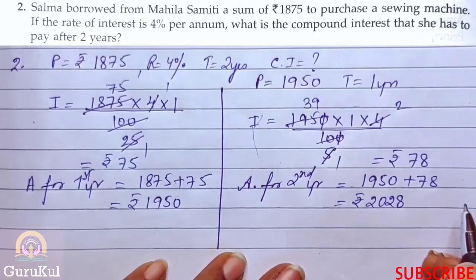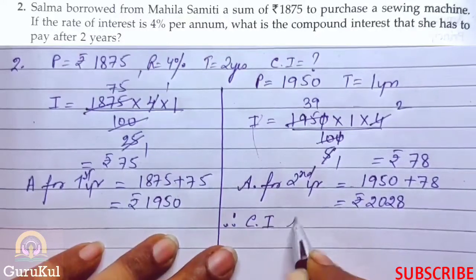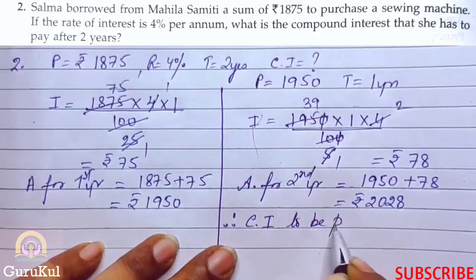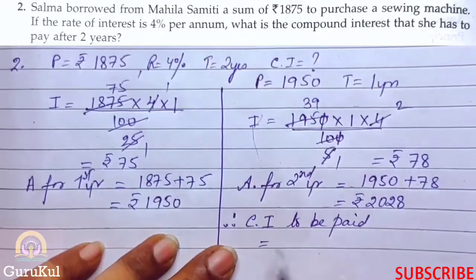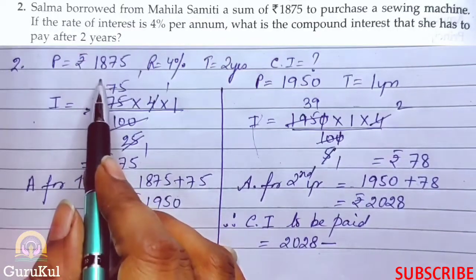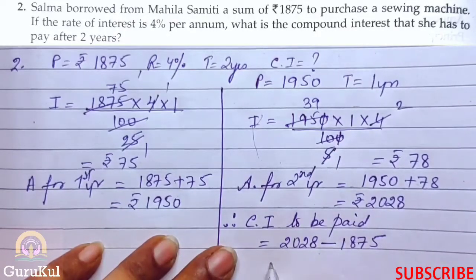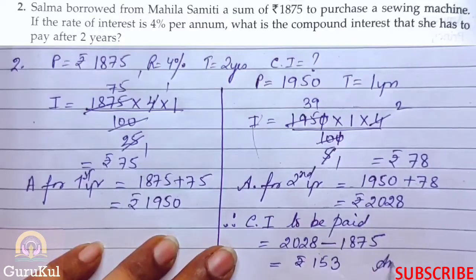So what is the compound interest that she has to pay after 2 years? Therefore, compound interest to be paid equals 2028 minus actual amount which was 1875, that gives us ₹153. This is the answer.